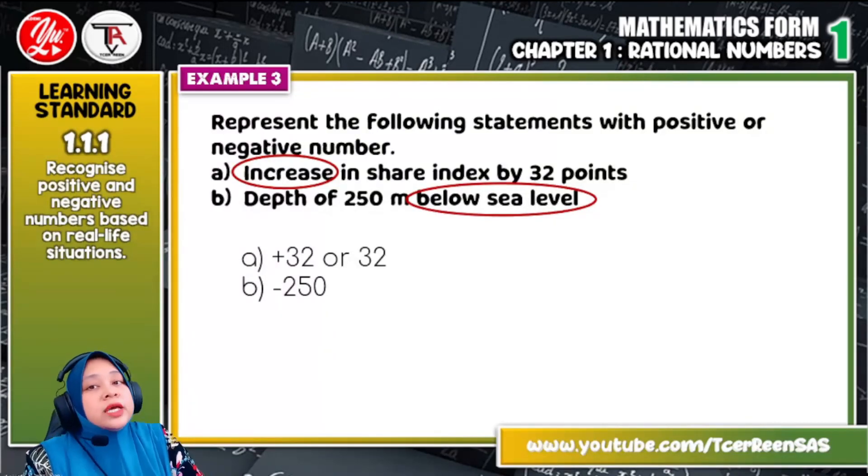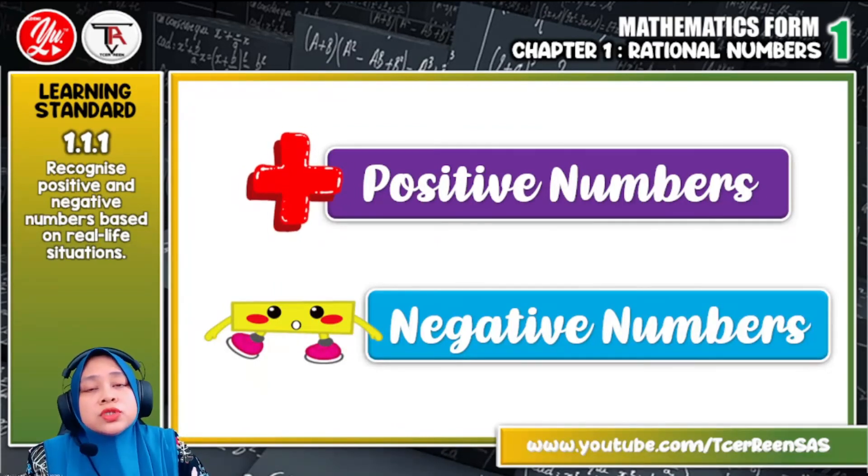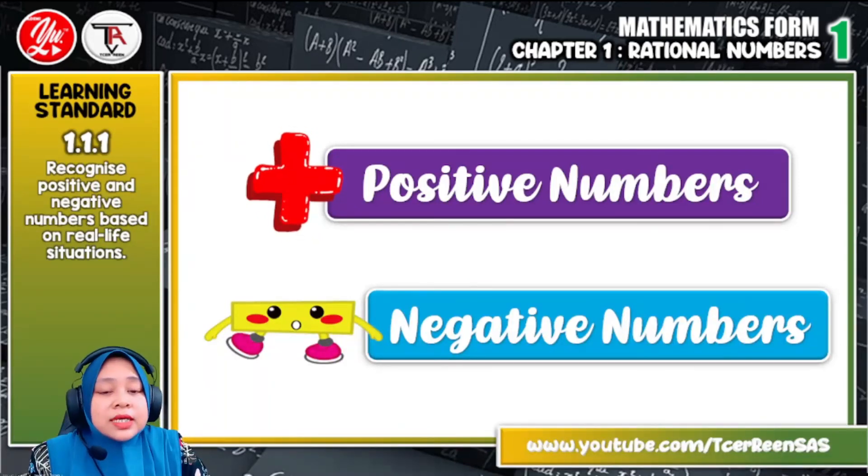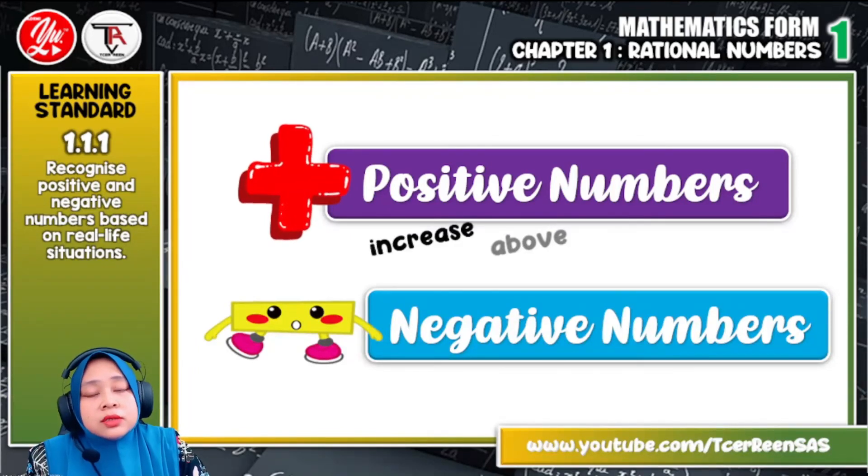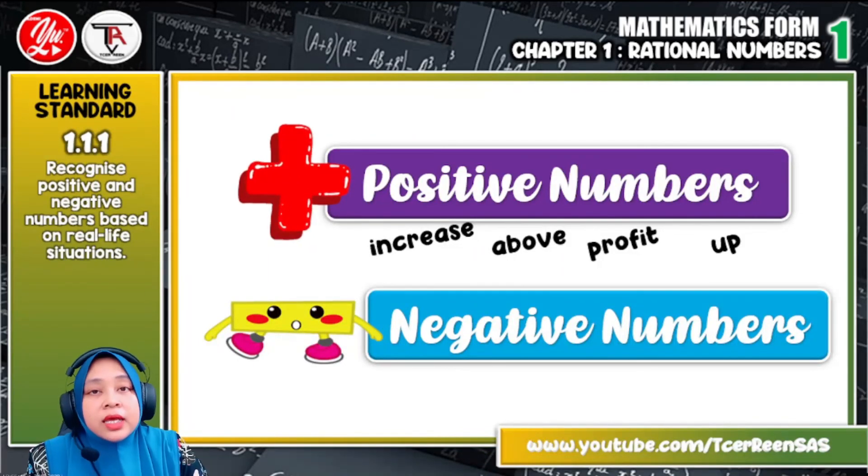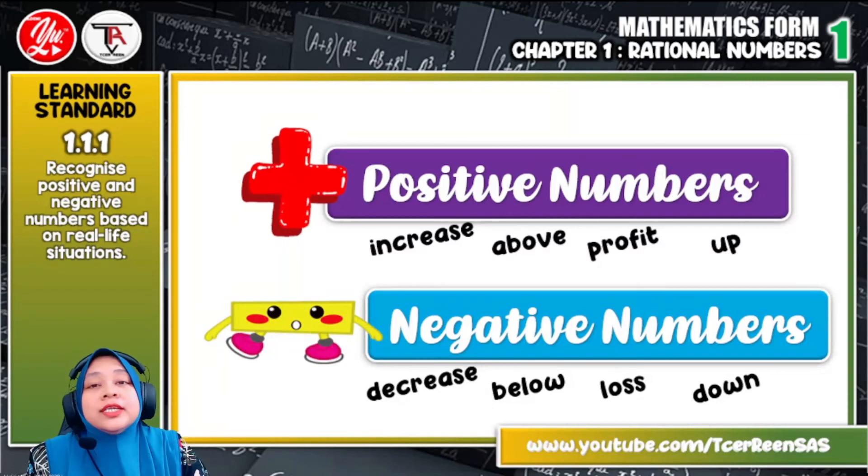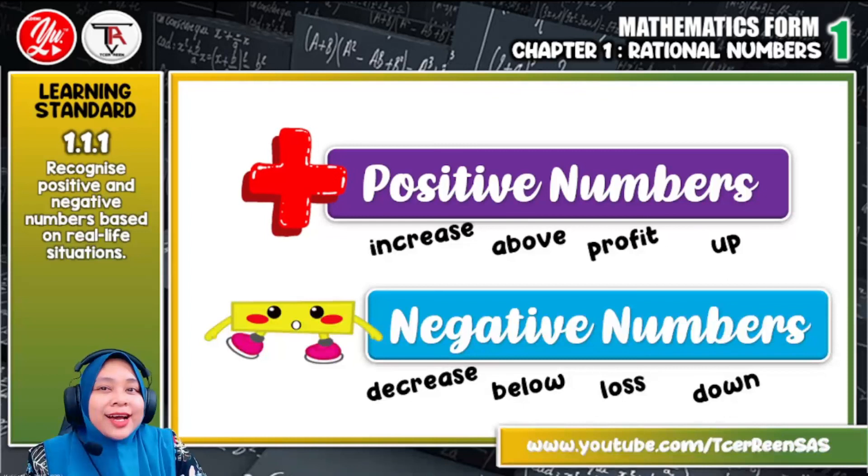Okay, so I hope that you can understand what is negative number and positive number. How to determine it, just looking at the word used or maybe the picture given. For positive number, here are the words that refer to positive number, such as increase, above. Okay, for example, we have used before above the sea level or profit and then going up. And the opposite word that show the negative number is decrease, below, loss or down. And maybe you can find another word that is referring to positive and negative number. But I hope that you can understand it well.